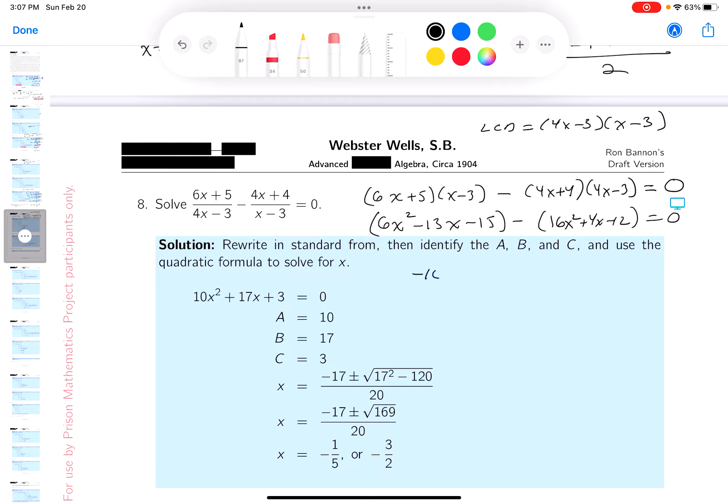You're going to get minus 10x squared. Let's see, minus 13 minus 4 is minus 17x, and minus 15 and minus 12 is going to be minus 3 equals 0. I tend to like equations where the leading coefficient is positive, so I'm going to multiply both sides by minus 1, and you get 10x squared plus 17x plus 3 equals 0.